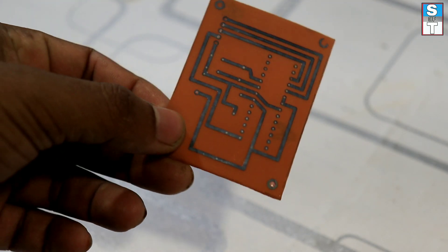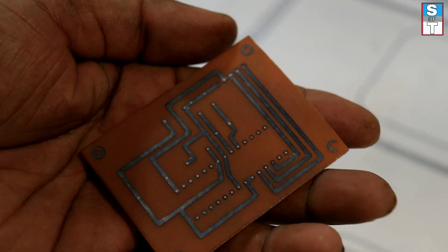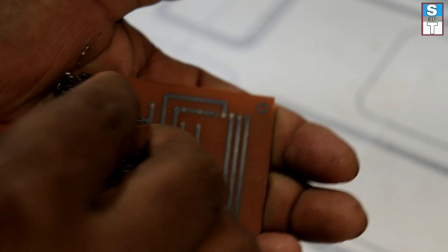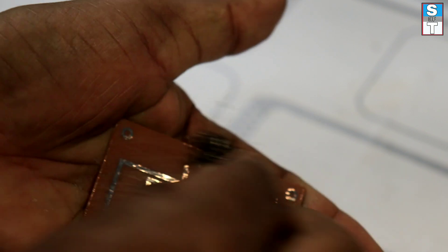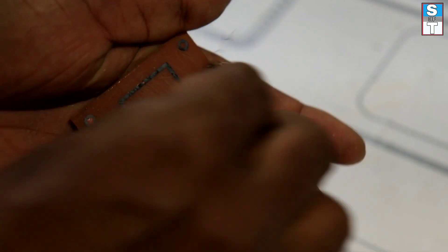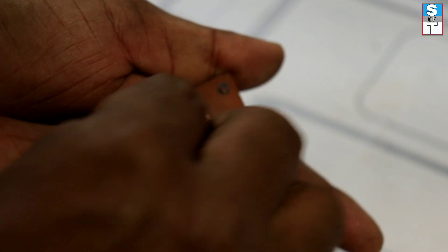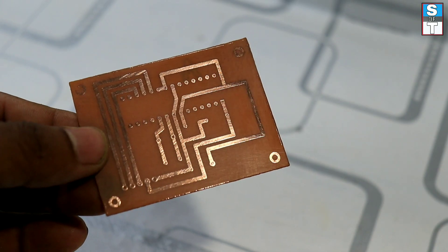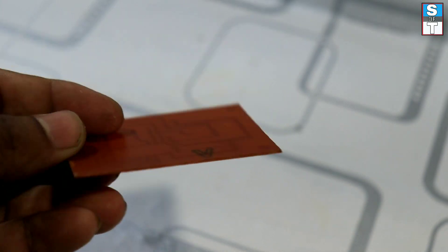Now the etching is completed. Here you can see that the coppers are removed. Now by using the scrubber, remove the toner from the circuit. Now the toner is completely removed.